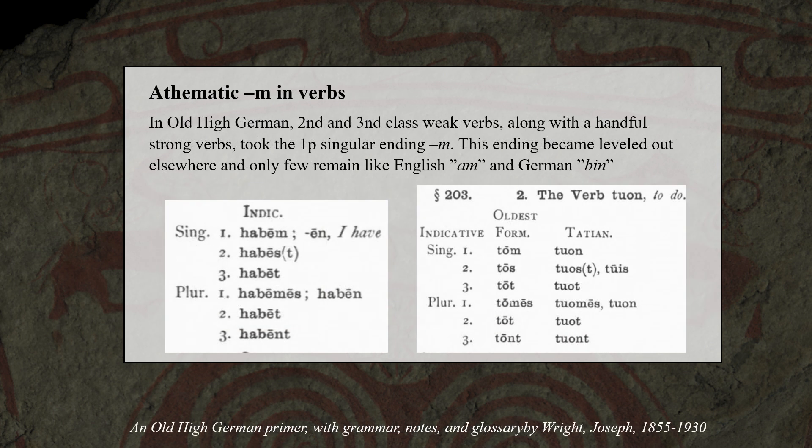Old High German was the morphologically most conservative West Germanic language, and it had many archaisms in verb forms that are completely lost in, for example, Old English and Old Saxon. This is seen in for example second and third class weak verbs, along with a handful of strong verbs that took the first person singular ending -M, from the Proto-Indo-European athematic forms.